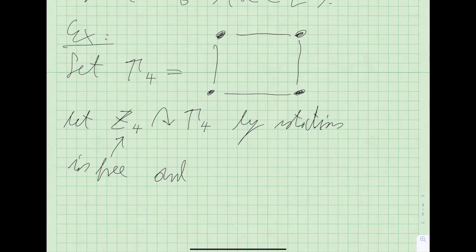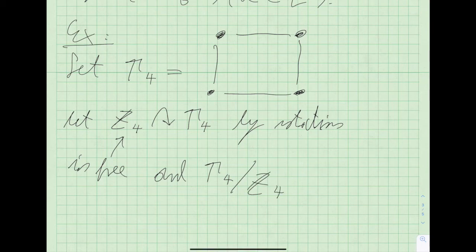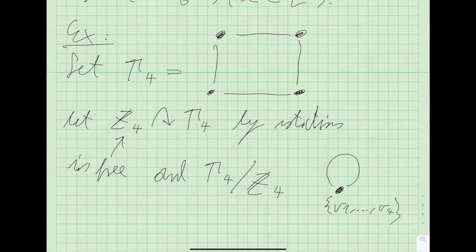So the quotient graph has just one vertex — the orbit of any of them, say V1 through V4 — and then a single edge, which is a loop, together with its inverse edge. That single loop represents the orbit of all edges.